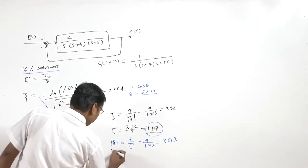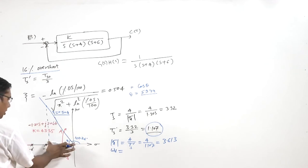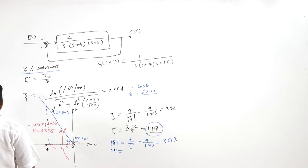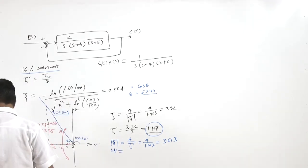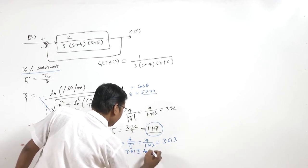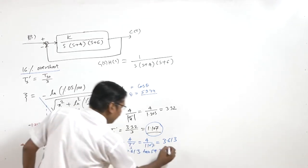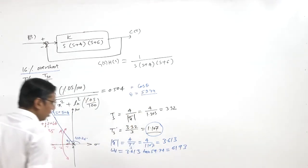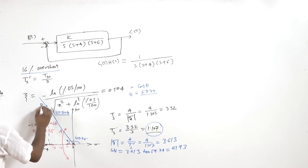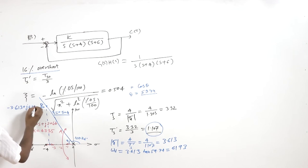We compute omega_d using tan(theta) = omega_d / sigma_d, so omega_d = sigma_d × tan(theta). This gives omega_d = 6.193. Therefore, the desired pole location, point B, is at -3.613 + j6.193.